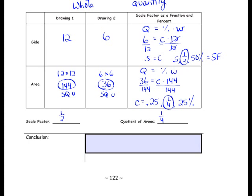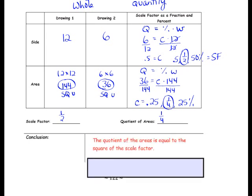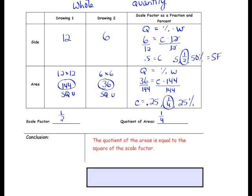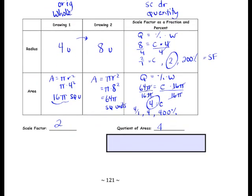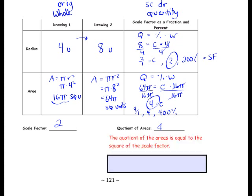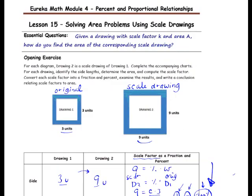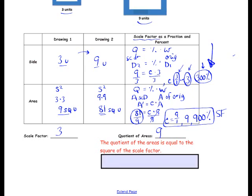Now let's look at a conclusion for these three problems. The quotient of the areas is equal to the square of the scale factor. If you take 1 half and multiply it by itself — squaring it — 1 half times 1 half is 1 fourth, and that is the quotient of the areas. For the circle example, the scale factor is 2, and squaring it gives 4, which is the quotient of the areas. For the first problem, the scale factor is 3, squared is 9, which is the quotient of the areas.